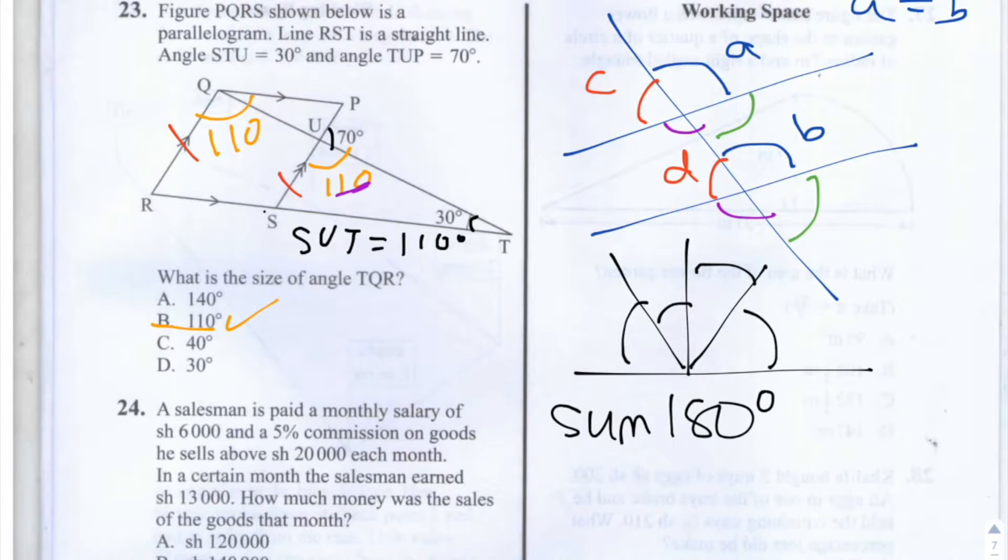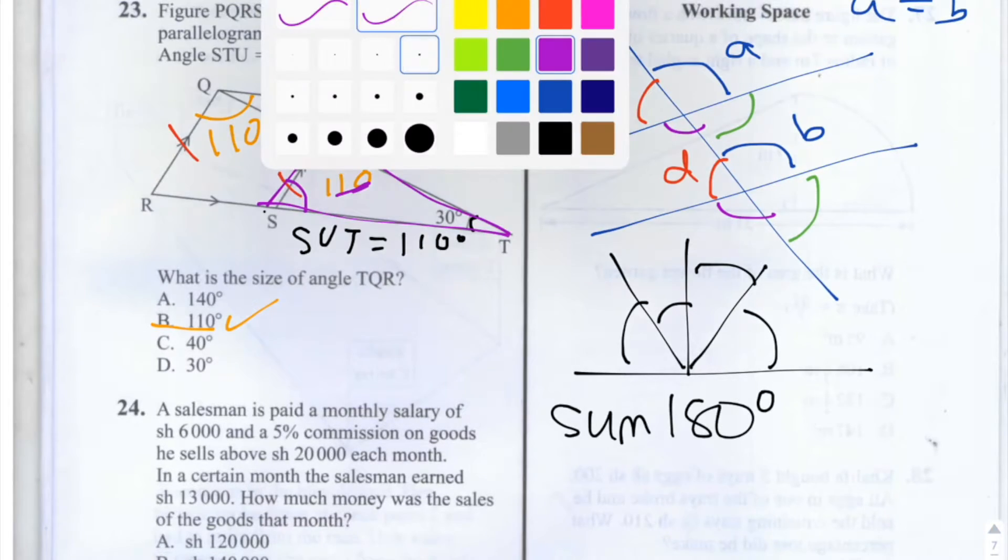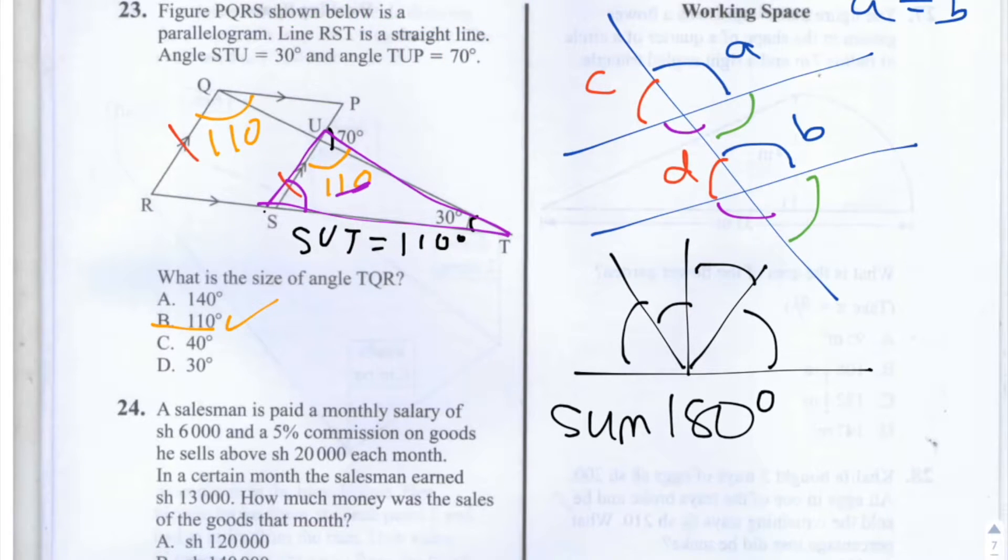Then realizing that we have a triangle here, and finding out this other angle, and then using it to find what the value of RSP is, again using the fact that it's a straight line so it will sum to 180. And then using our knowledge that PQRS is a parallelogram, knowing that the angles of a parallelogram will sum to 360.